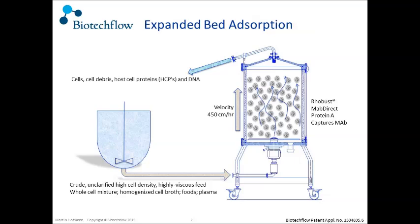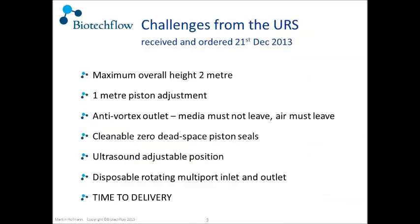The whole cell broth with intact viable cells is pumped onto the expanded bed. The media is Upfront's robust media, which is a tungsten carbide agarose protein A media. The flow in this column is always upflow. There are no meshes, no moving of a piston down and elution in a smaller volume by going downflow as with the Streamline. The elution is in expanded mode, which is very important — because we were diluting after eluting, and it was not necessary.